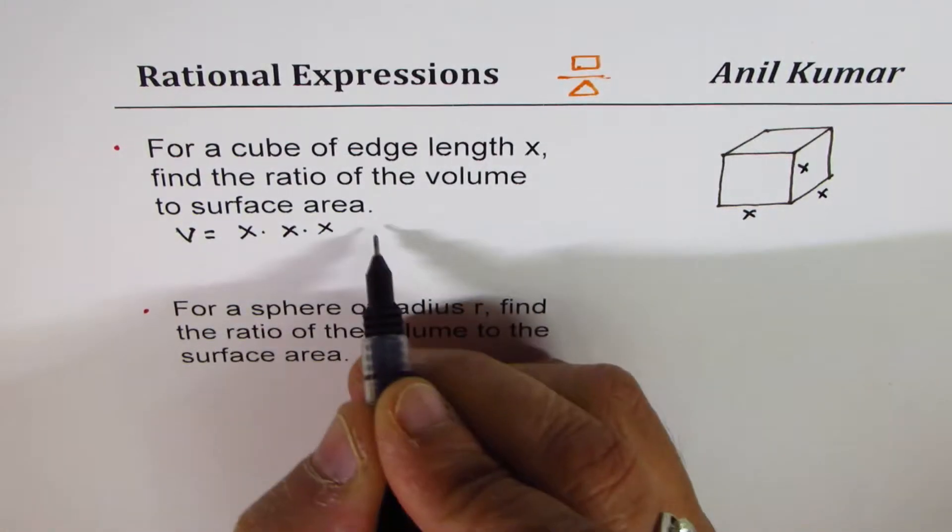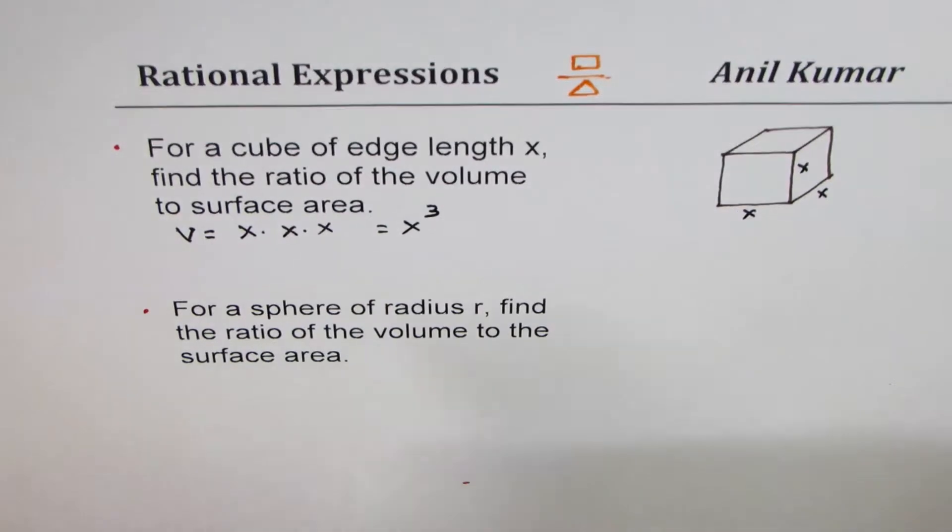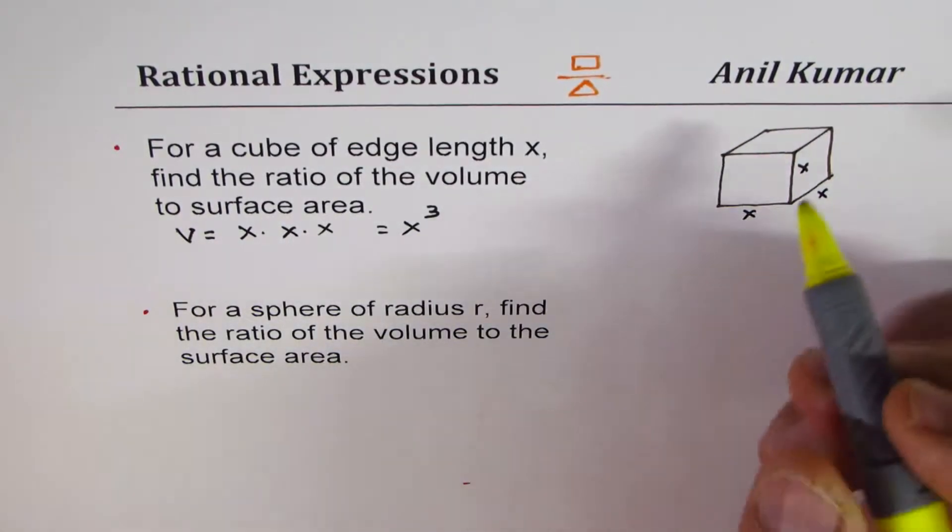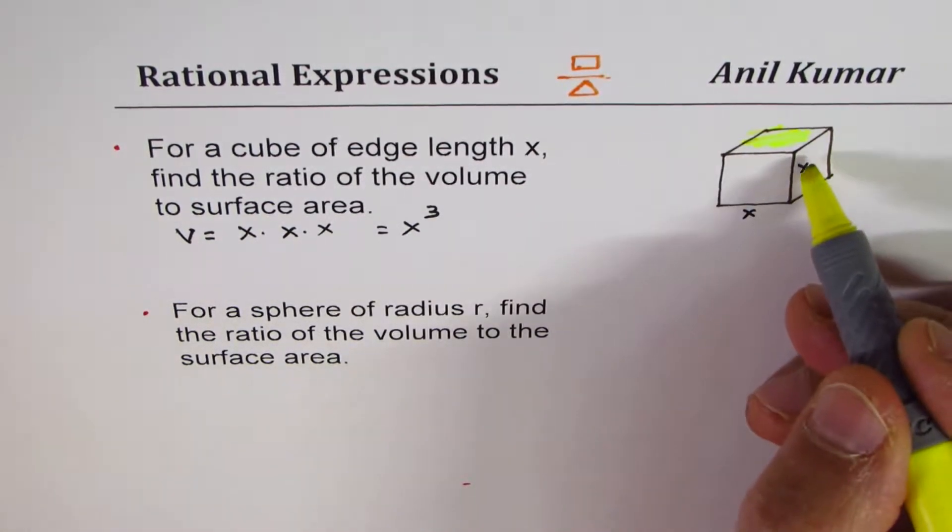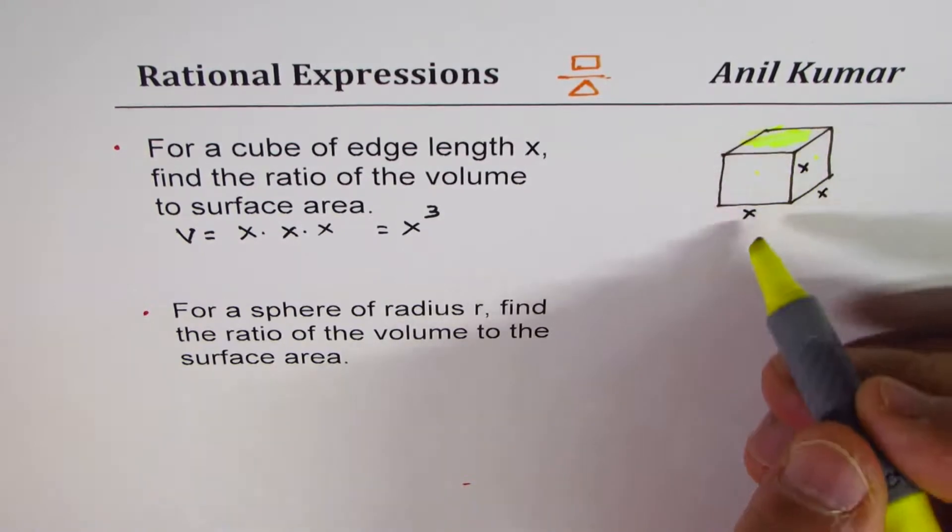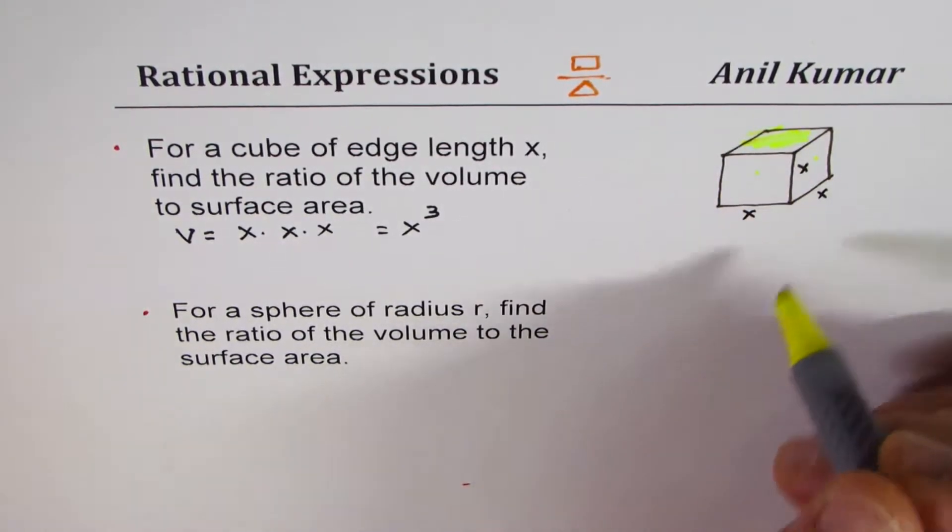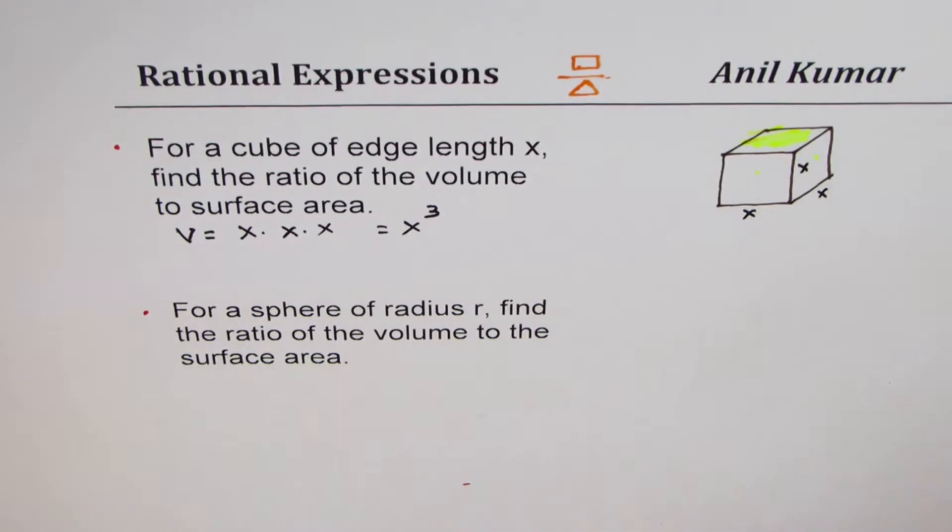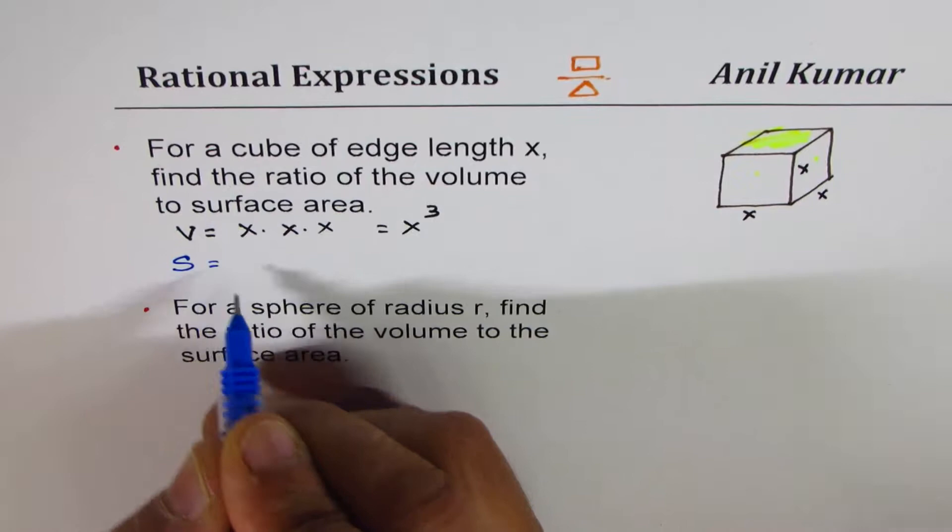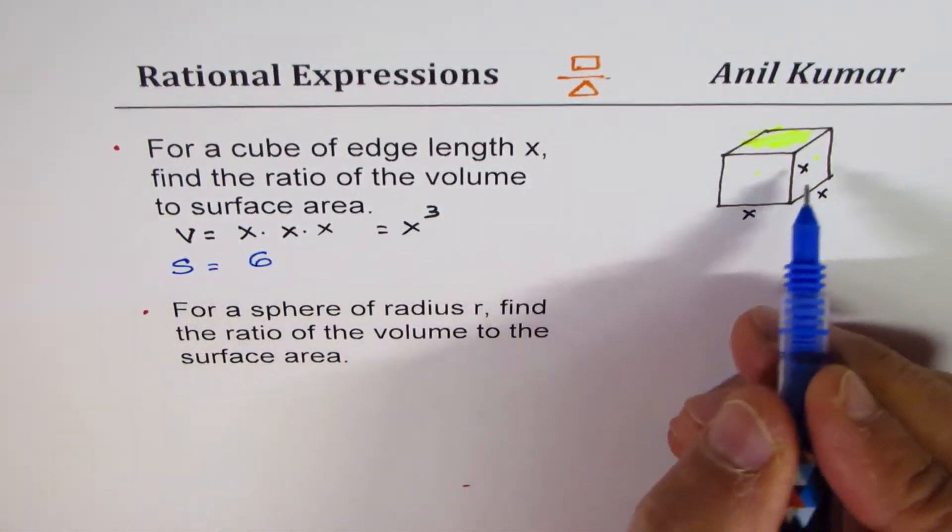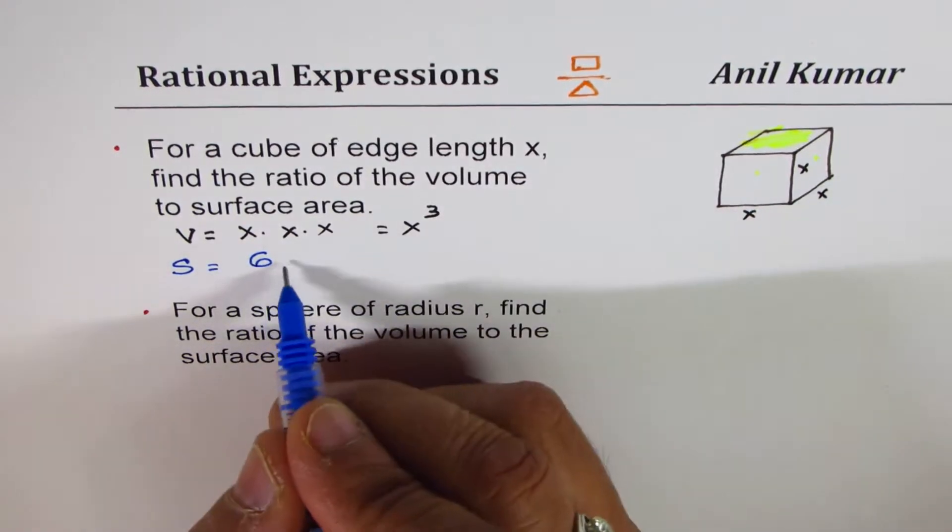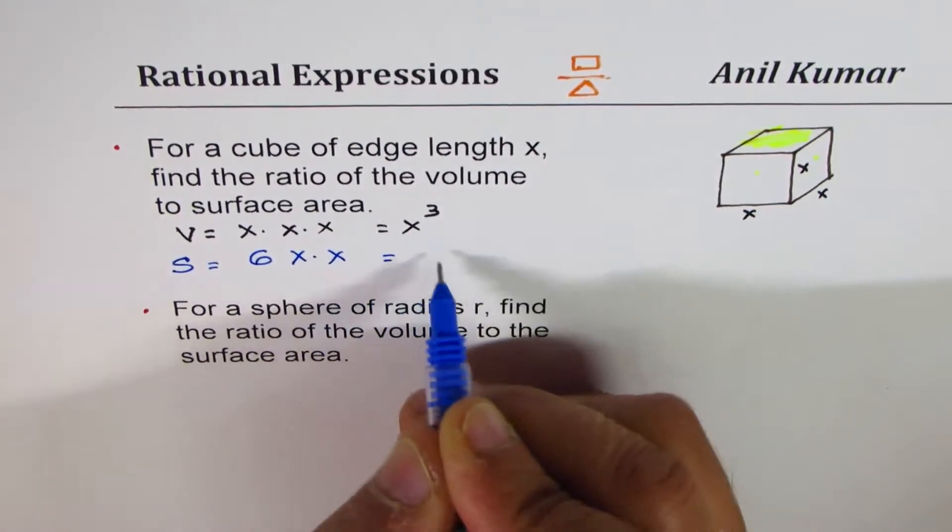How about the surface area? The cube has six surfaces, right? Like this is one surface which is the top. Similarly we have the sides, we have top and bottom and four sides. All the areas are same, so we have six different surfaces. Surface area is there are six surfaces and area of which is length times width, x times x, or you could write 6x².